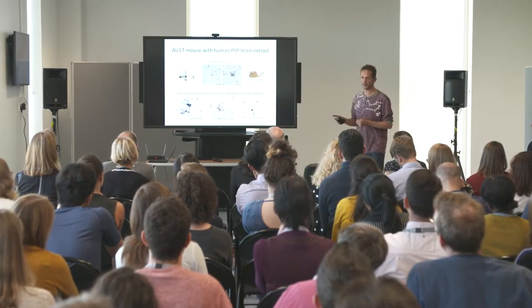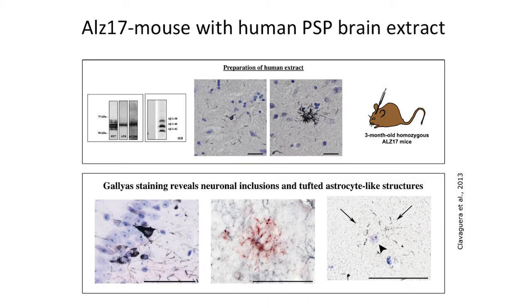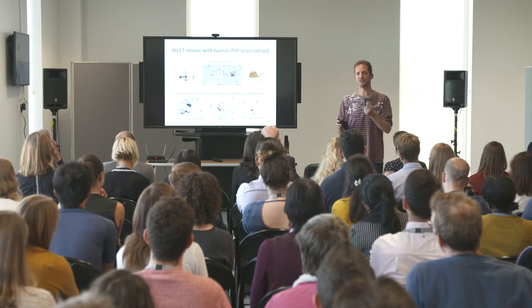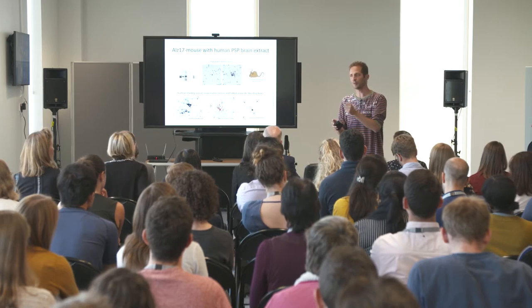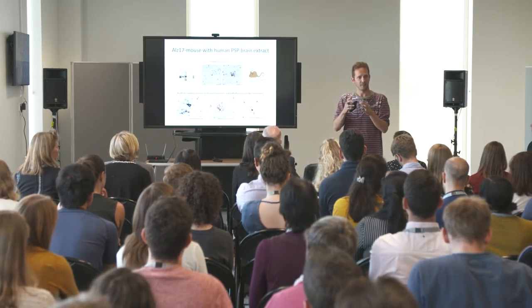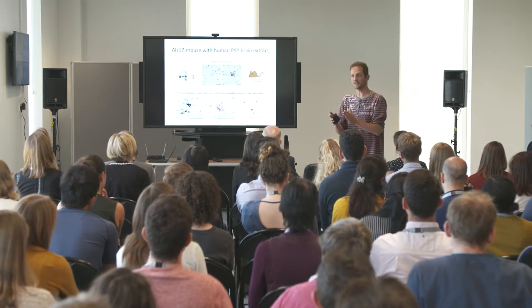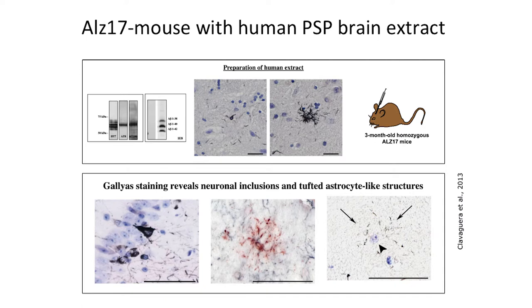Michel Goedert, my very close collaborator at the LMB, did these conceptually beautiful experiments where he has a mouse model with human tau overexpression. If you inject brain extract from patients with different tauopathies into these mice, you can actually see that the pathology specific to that disease will develop in the mouse. This adds to a model where the tau protein itself can be in some form infectious.